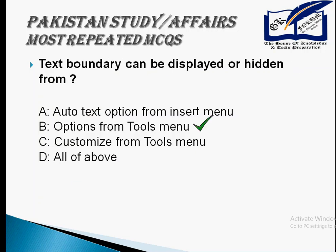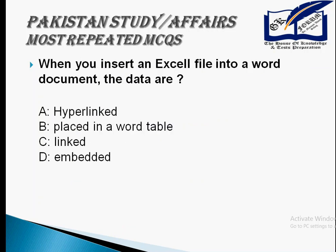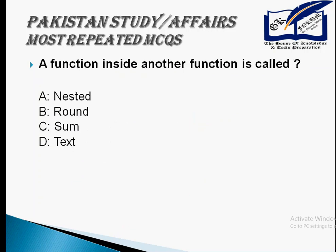Text boundary can be displayed or hidden from the Options in the Tools menu. Which function displays row data into column or column data into row? It's the transpose function — a very important question. When you insert an Excel file into a Word document, the data are placed in a Word table. A function inside another function is called a nested function — a very important NTS question.